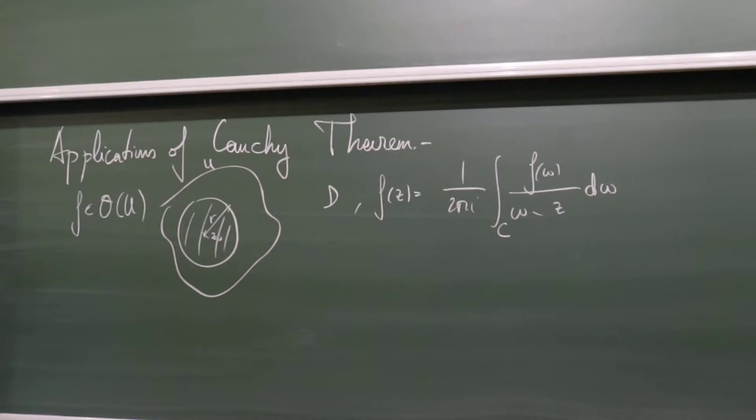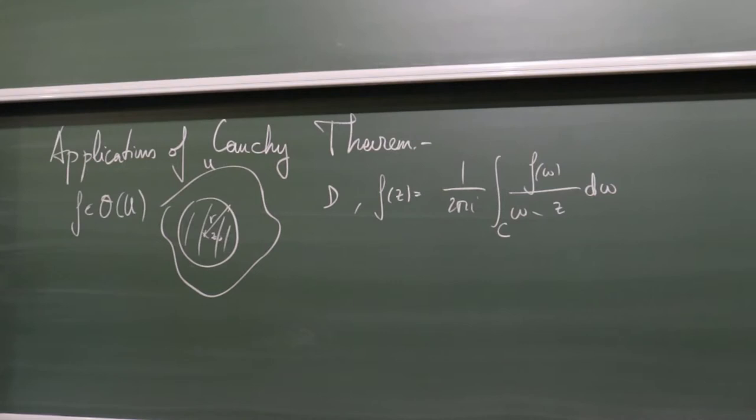This formula says that the values of the holomorphic function inside the disk are completely determined by the values on the circle, on the boundary.